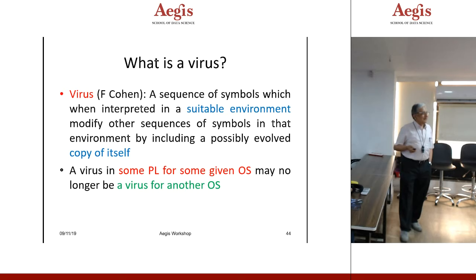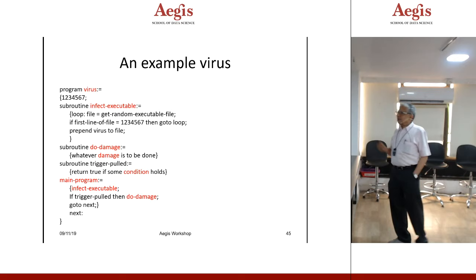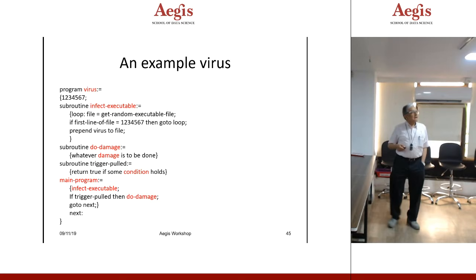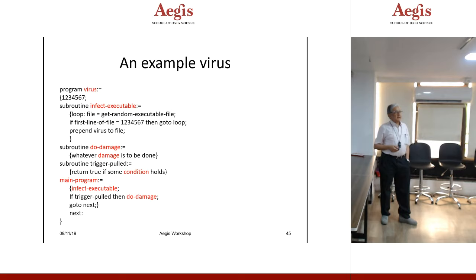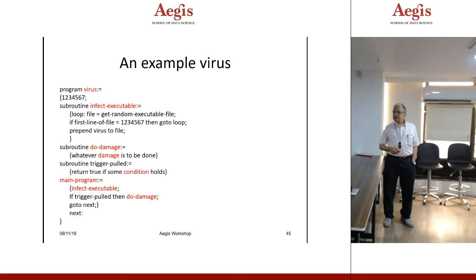A virus in some programming language for some given OS may no longer be a virus for another OS. Don't have the myth that Mac OS is safe and MS Windows is unsafe — though MS is always less safe. Windows provides good data for researchers as well. Here is a simple example of a virus: a subroutine 'infect executable' loops, gets a random executable file, checks if the first line marker is 1-2-3-4-5-7 and if so skips to the next (already infected), otherwise prepends the virus to the file, performs the damage payload, checks a trigger condition, and then moves on.